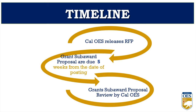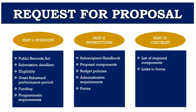Cal OES released the Listos California CERT Grants Program Request for Proposals on January 25, 2022, giving applicants approximately five weeks to put the proposal packet together. Once complete, applicants will need to email a copy of the proposal packet to the Listos Grants Unit. The RFP has three parts. Part 1 explains what you have to do — the Public Records Act, submission deadline, eligibility, grant subaward performance period, funding, and programmatic requirements. Part 2 covers policies and administrative requirements, including the subrecipient handbook, required proposal components, budget policies, administrative requirements, and required or additional forms.